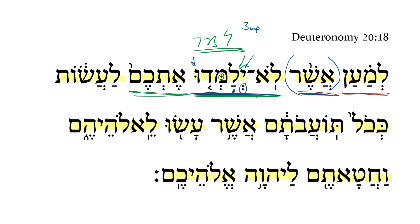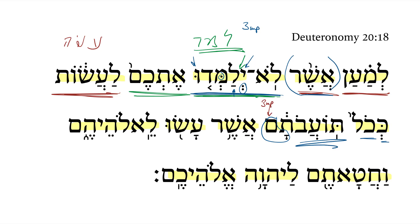'Lamad' in the Piel is going to be 'teach'; 'lamad' in the Kal would be 'to learn.' So here we get 'to teach.' So that they will not teach you to do — there's a Kal infinitive construct of the verbal root 'asa' plus the 'lamed' preposition — to do according to all of their abominations. Notice the 3MP pronominal suffix. 'Toavah' with the qamets-he at the end, and we get the plural: their abominations, further modified by the relative clause 'which they do' — a Kal perfect third common plural of the same verbal root 'asa.'